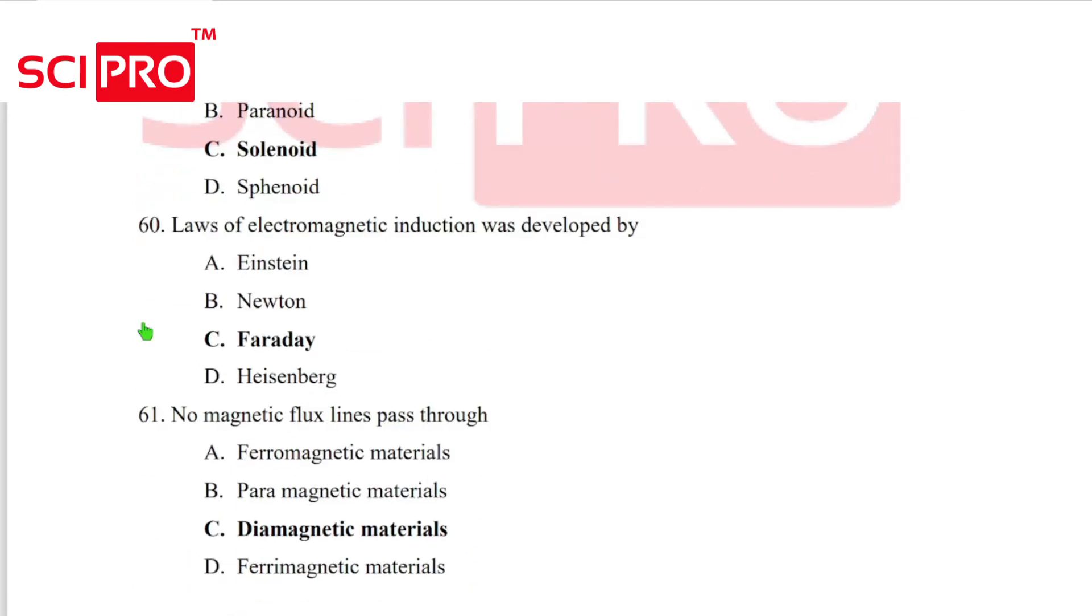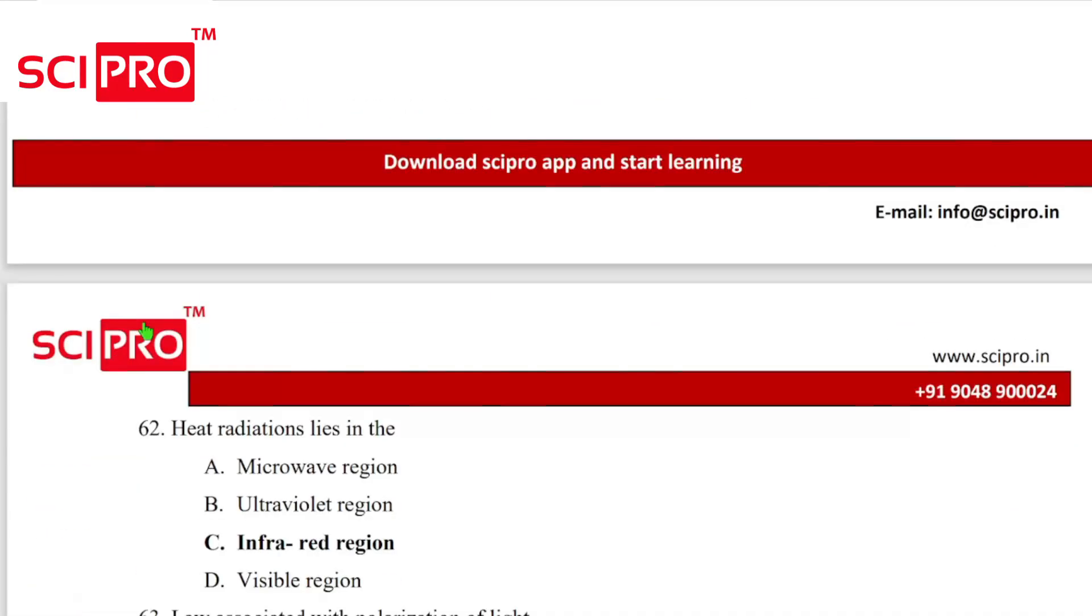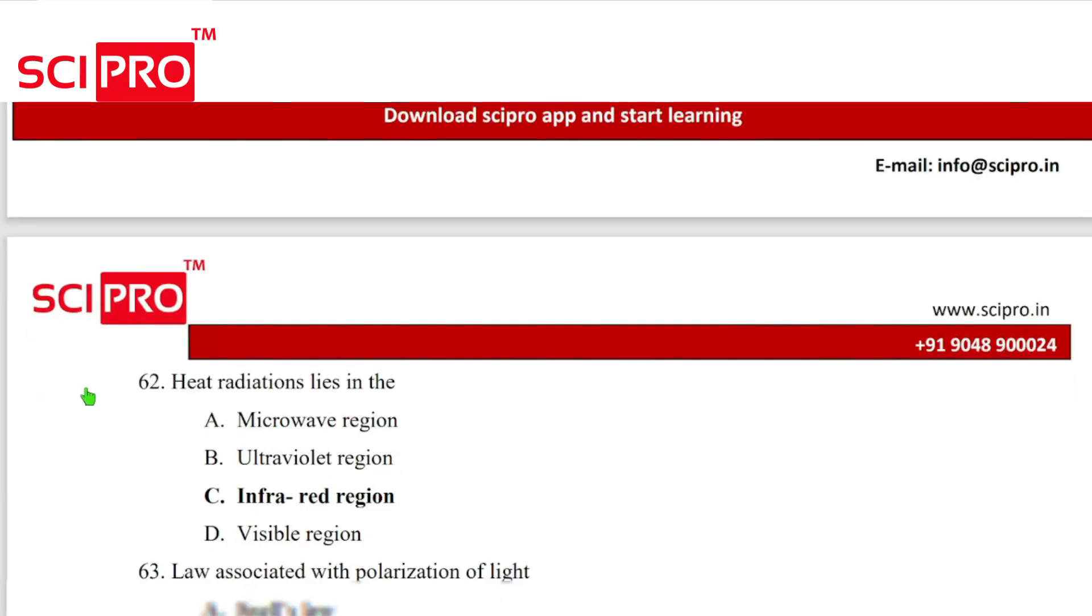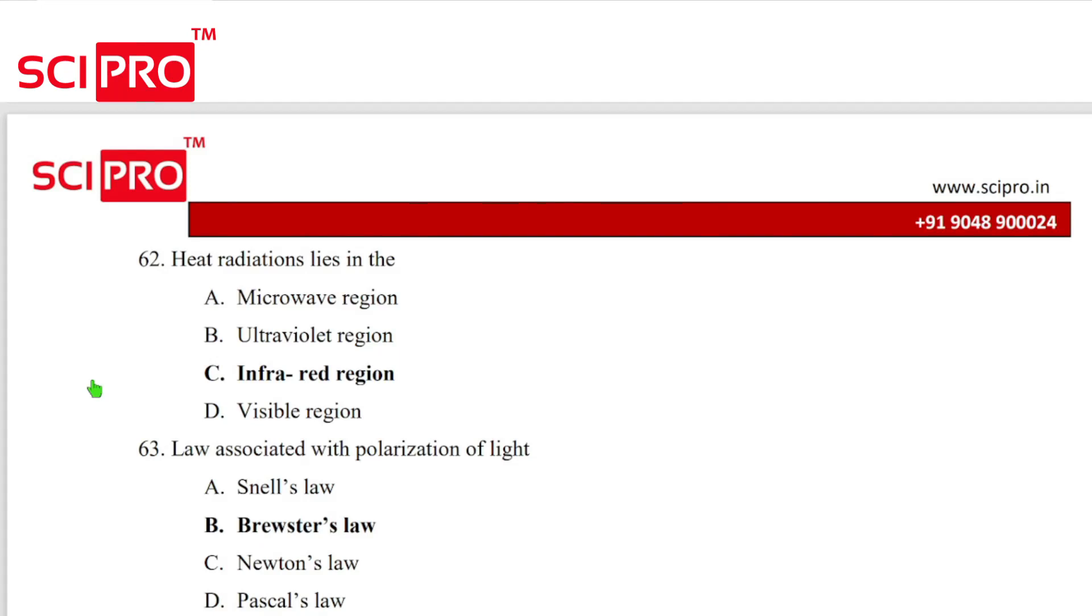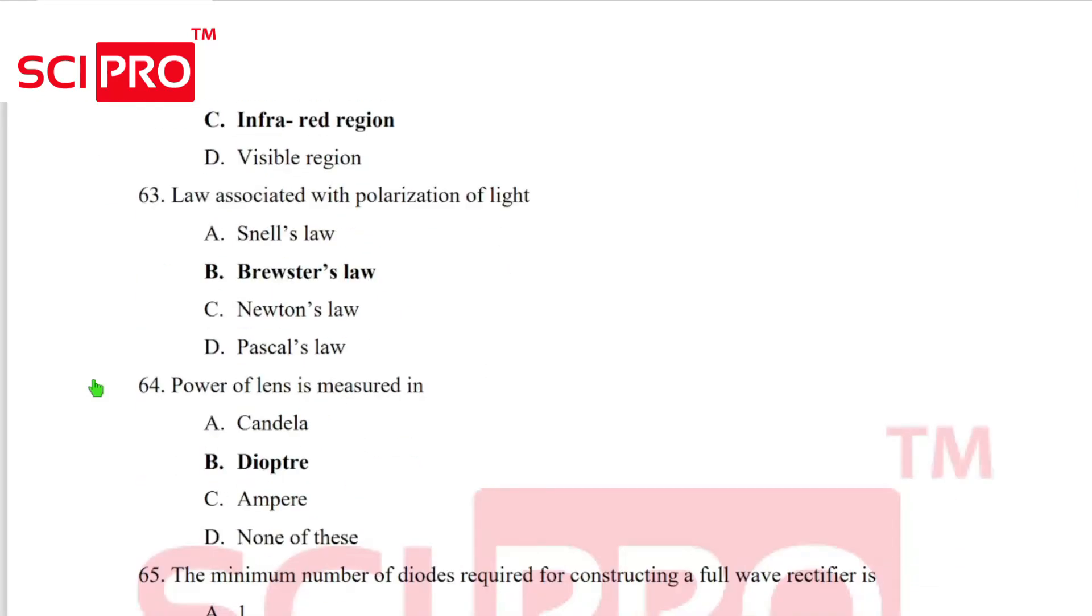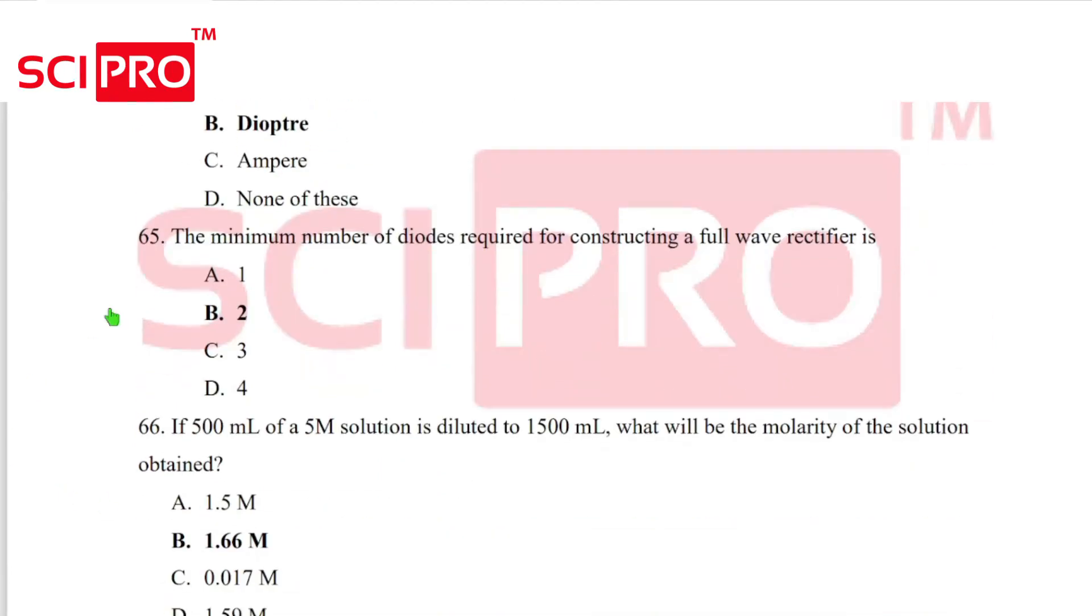Question number 61, no magnetic flux lines passed through diamagnetic materials. Question number 62, heat radiation lies in the infrared region. Question number 63, law associated with polarization of light, Brewster's law. Question number 64, power of lens is measured in diopter. Question number 65, the minimum number of diodes required for constructing a full wave rectifier is 2.